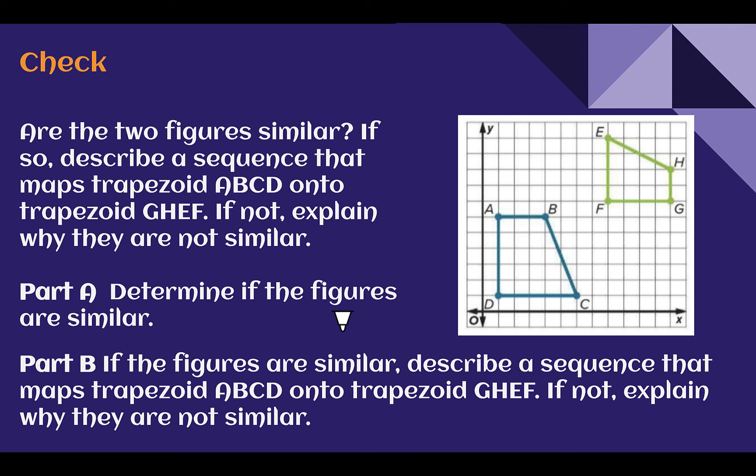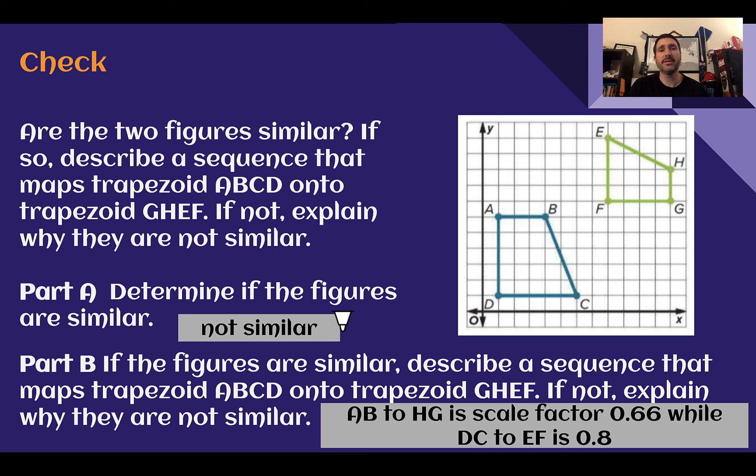Check your understanding. Use the picture to help answer both parts. Pause the video now and complete the check. Check your answer. These are not similar. If we check our ratios, this shortest side here that's kind of on the diagonal would correspond here with that short side. So AB is 3 compared to HG of 2, so that ratio 2 thirds. If we compare, let's say, the bottom. This is 5. This is 4. So 4 over 5.